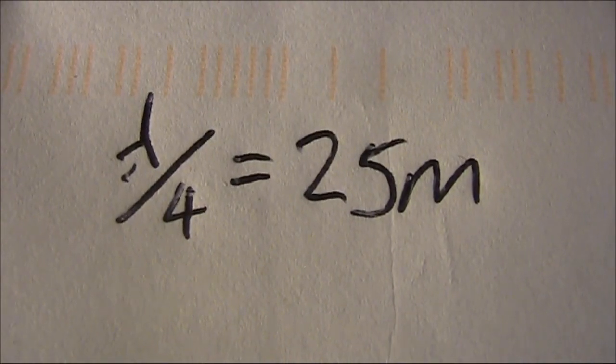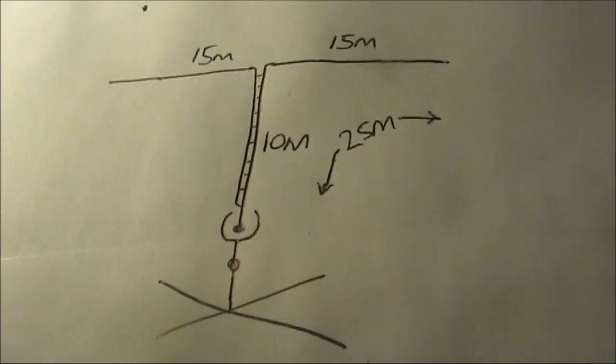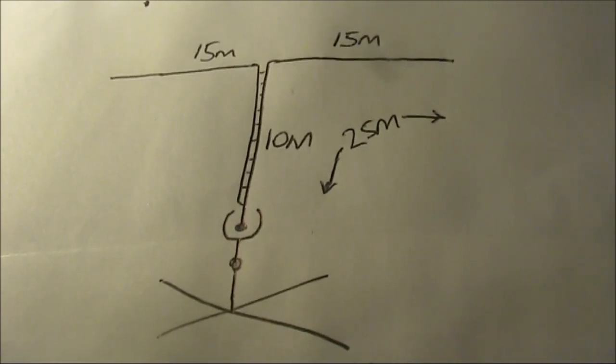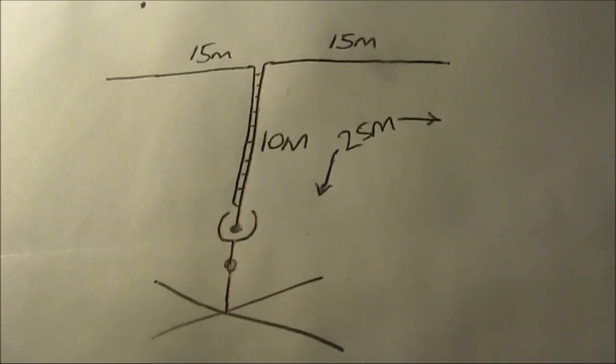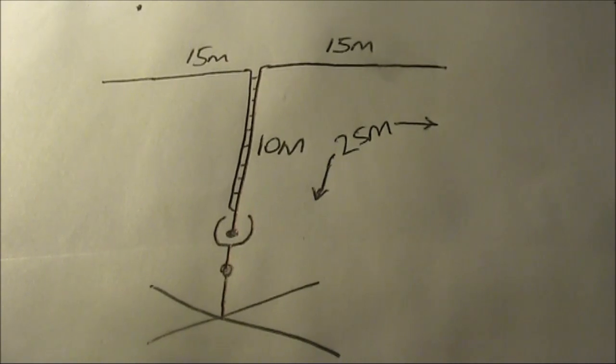A quarter of that is 25 meters. How do we relate that to the dimensions of the antenna that I did the test on?